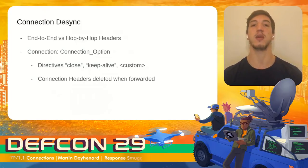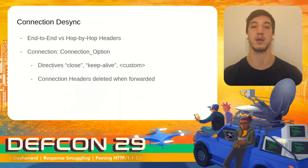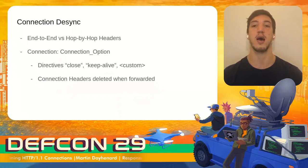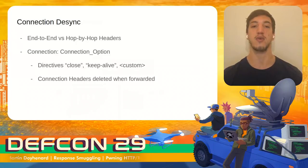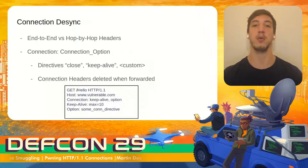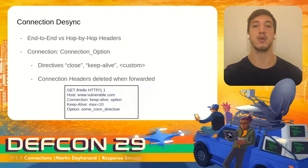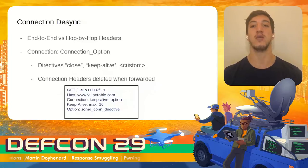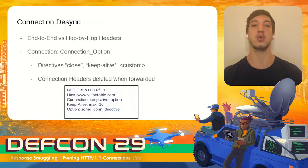It is also possible to cause desynchronization using a feature provided by the HTTP protocol itself. To understand this technique, I'll explain the difference between an end-to-end and a hop-by-hop header. End-to-end headers are intended to travel from the client to the backend server and are forwarded by any proxy in the middle. Hop-by-hop headers are intended to travel only to the next node in the communication chain — proxies must not forward these headers and should remove them before forwarding the request.